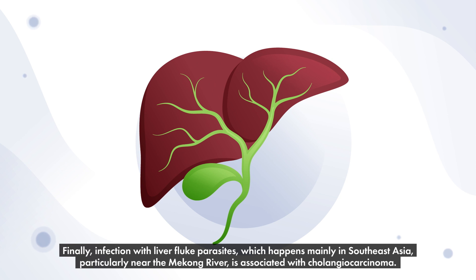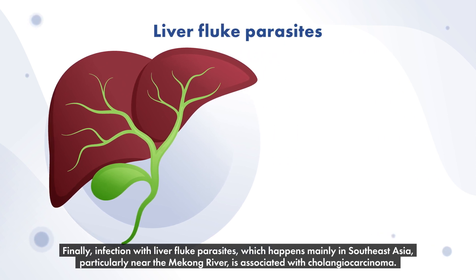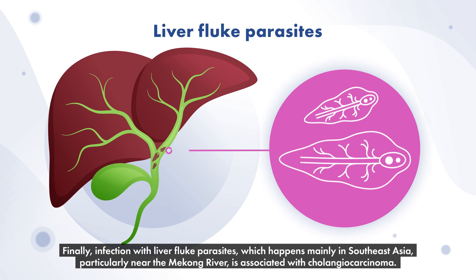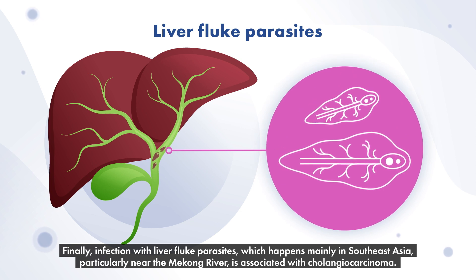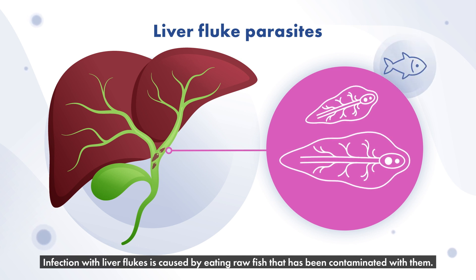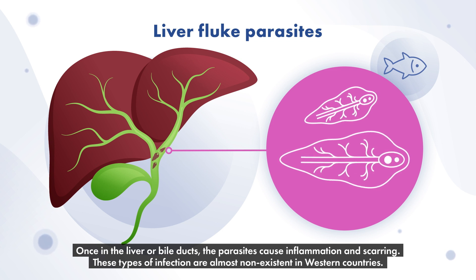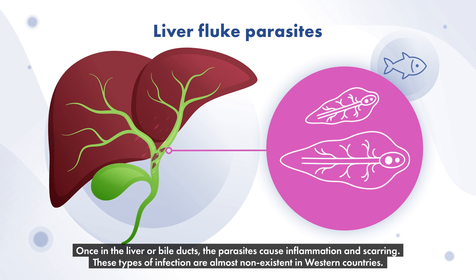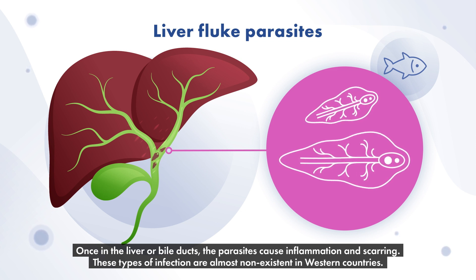Finally, infection with liver fluke parasites, which happens mainly in Southeast Asia, particularly near the Mekong River, is associated with cholangiocarcinoma. Infection with liver flukes is caused by eating raw fish that has been contaminated with them. Once in the liver or bile ducts, the parasites cause inflammation and scarring. These types of infection are almost non-existent in Western countries.